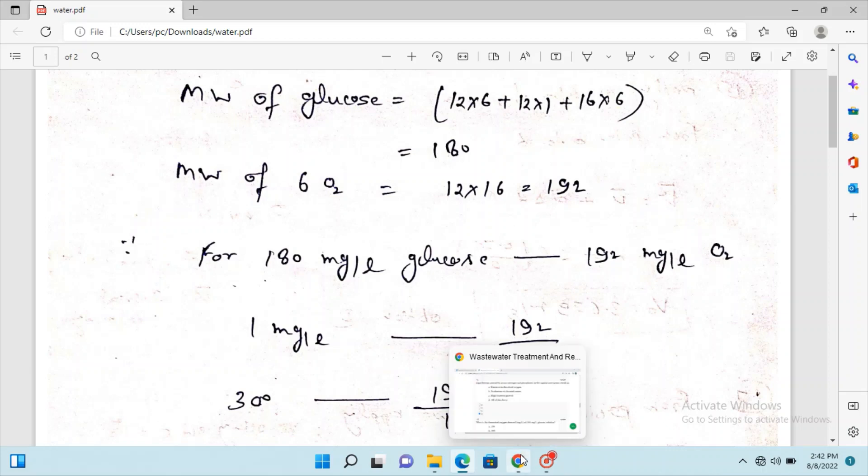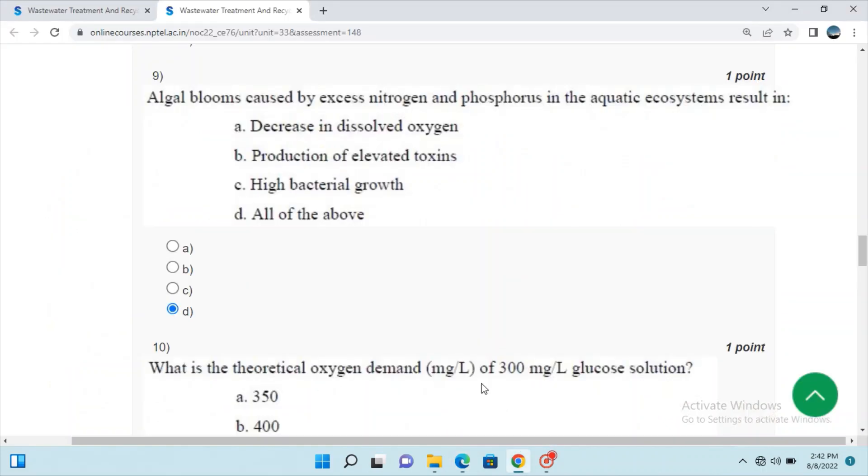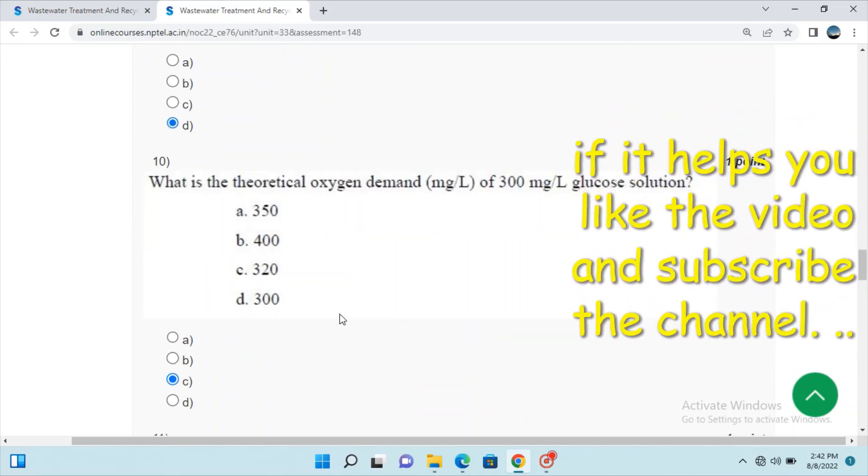By stoichiometry we can calculate the oxygen demand for 300 grams per liter of glucose. Option C is correct.